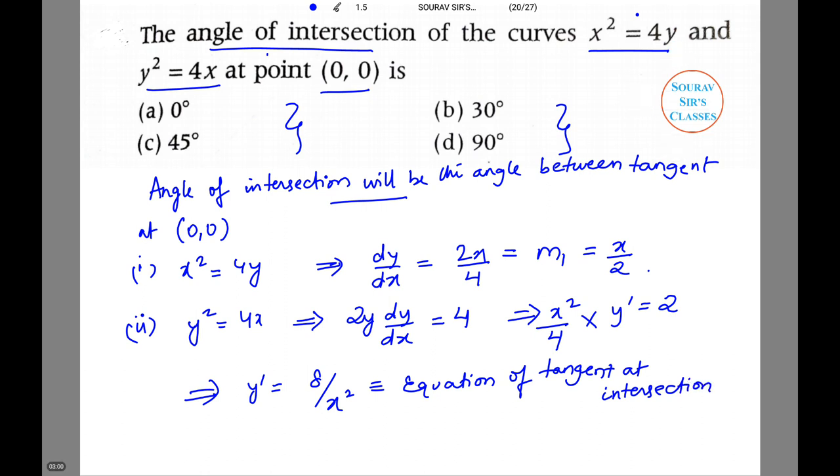So what we have done is we have taken the first equation, differentiated it with respect to x, and denoted the value as m1. Then we took the second equation, differentiated it, substituted the value, and got an equation in terms of y' and x². This is the equation of tangent at intersection.